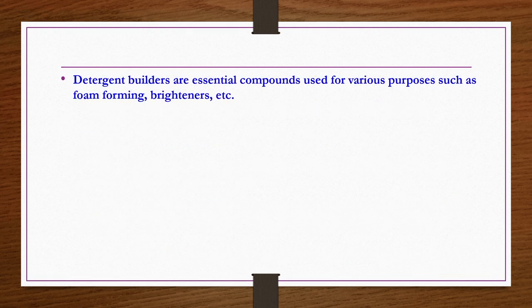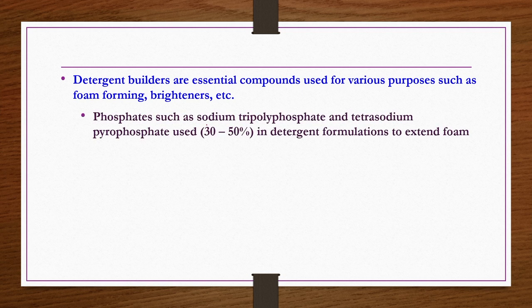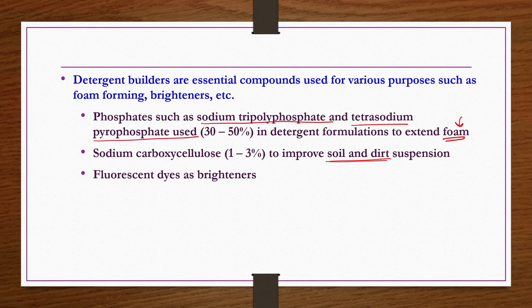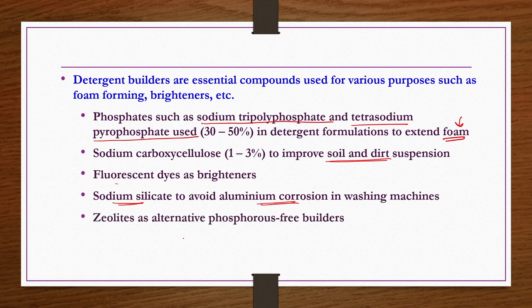Detergent builders are essential compounds used for various purposes such as foam forming and brightening. Phosphates such as sodium tripolyphosphate and tetrasodium pyrophosphate are used at 30–50% in detergent formulations to extend foam. Sodium carboxymethyl cellulose improves soil and dirt suspension and prevents re-deposition onto fabric. Fluorescent dyes are used as brighteners. Sodium silicates avoid corrosion of aluminum or metal parts of washing machines and utensils. Zeolites are used as an alternative phosphorous-free builder.